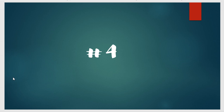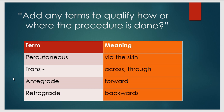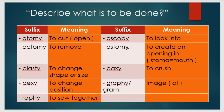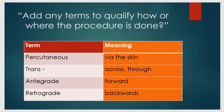Finally, the fourth point: if there is some additional term, we must add it to qualify or explain how or where the procedure is done. For example, if we are doing a nephrostomy — NEPHRO means kidney, -OSTOMY means to create an opening — but how are we doing it? PERCUTANEOUS. So we add percutaneous: percutaneous nephrostomy, meaning done through the skin. Another term is TRANS, which means across or through something.